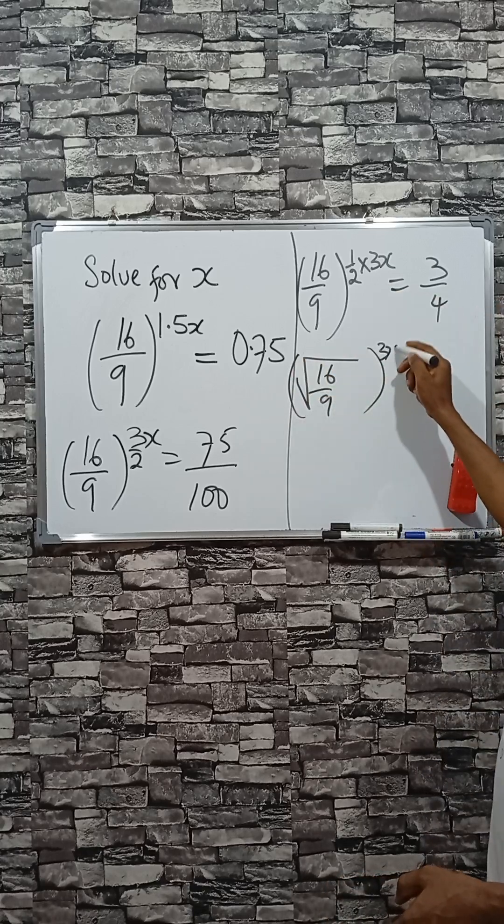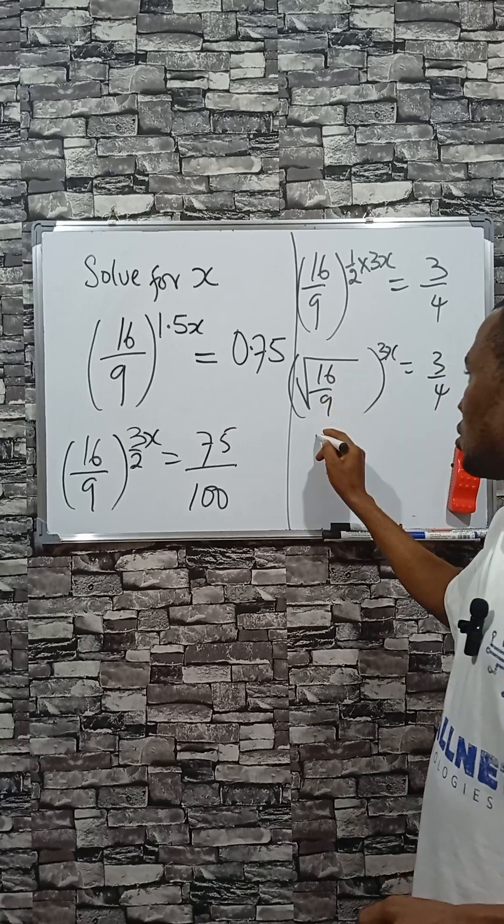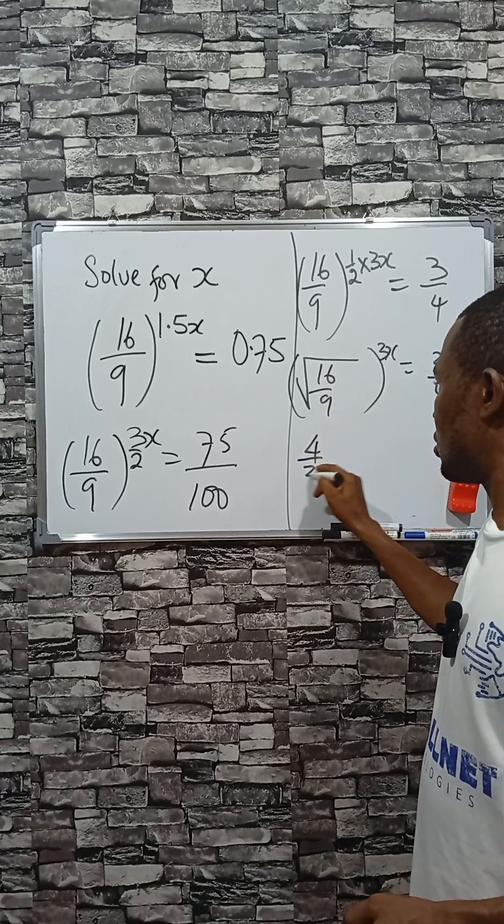Raised to the power of 3x equals 3 divided by 4. So the square root of 16 is 4, and the square root of 9 is 3.